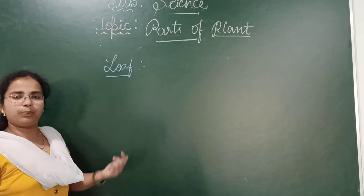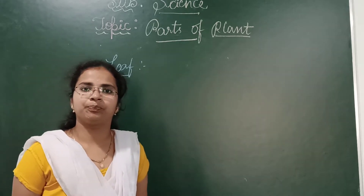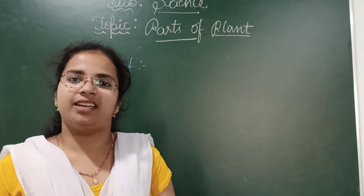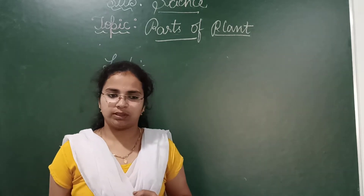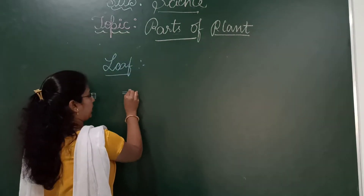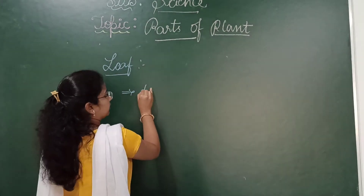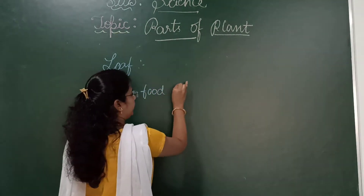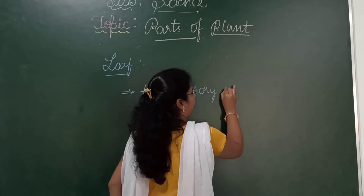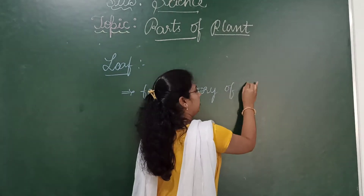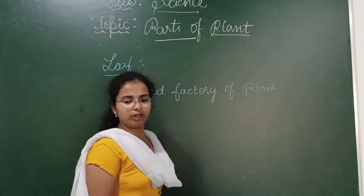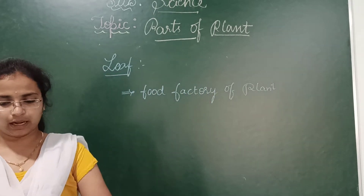As we prepare food in our kitchen, plants prepare their food in the leaf. So the leaf is called as the food factory of the plant.